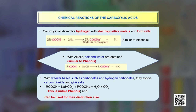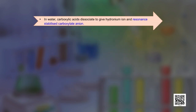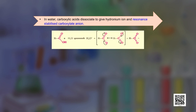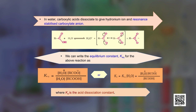Carbon dioxide is also one of the products in the reaction with carbonates, and this reaction is unlike phenols — so it can be used to distinguish carboxylic acids from phenols. In water, carboxylic acids dissociate to give hydronium ion and a resonance-stabilized carboxylate anion, where the negative charge is equally distributed on the two oxygen atoms.